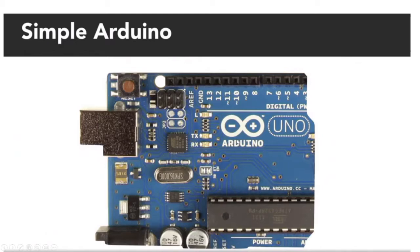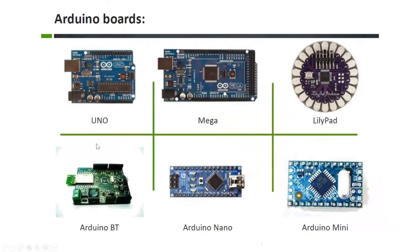Let us look at this board keenly. It may look like there is only one board, but we have different types of Arduino - they are all called Arduino. You may think there is only one kind, the Uno at the corner here, but we also have Mega, Lillipad, Arduino BT, Arduino Nano, and Arduino Mini. All these are used in different projects, and it all depends on what project you want to pick.